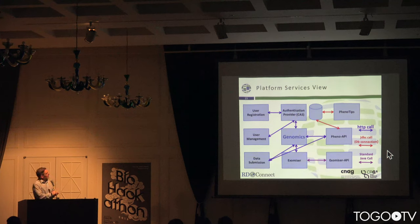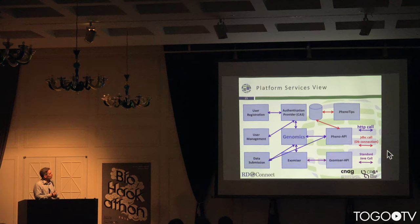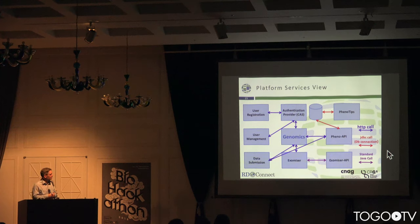This is how the system has been built. We have various different modules: user registration, user management — which are controlled through CAS for authentication — a data submission module, and phenotypes. These all feed into the central genomics platform, from which we can make calls out to tools such as ExomisER through APIs.